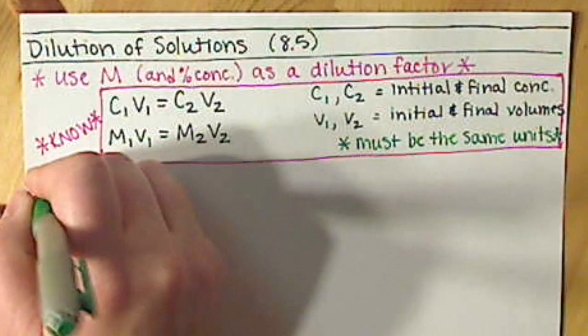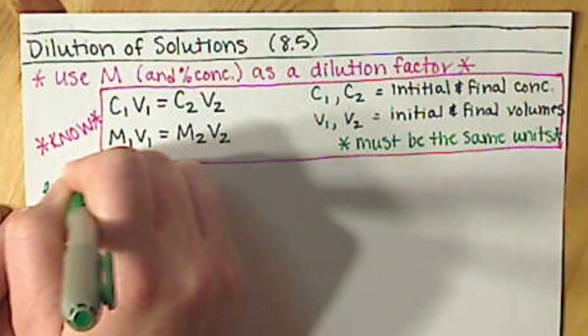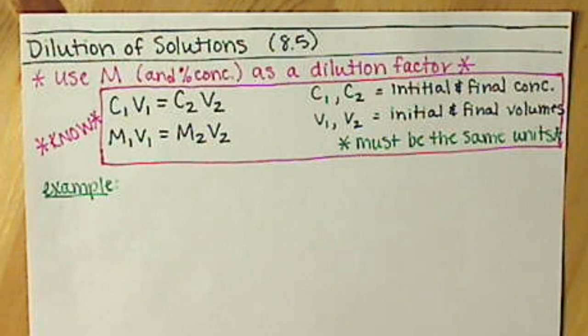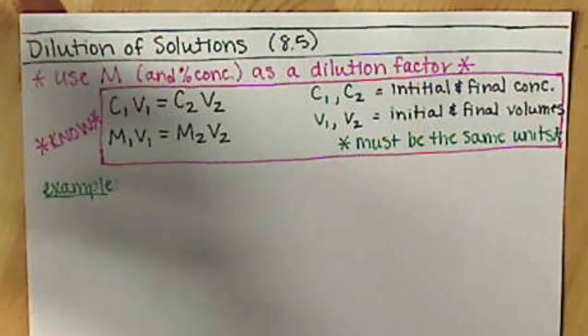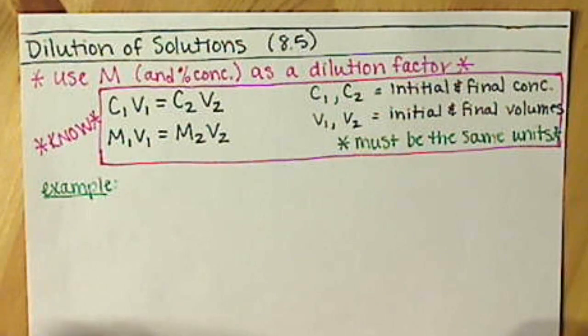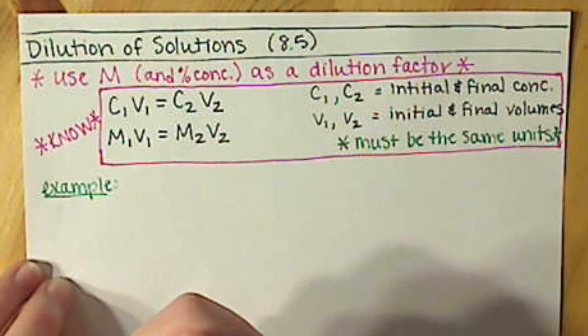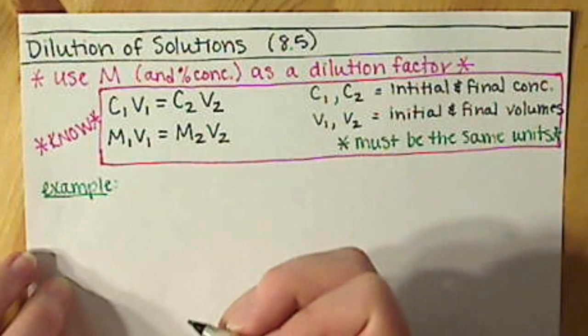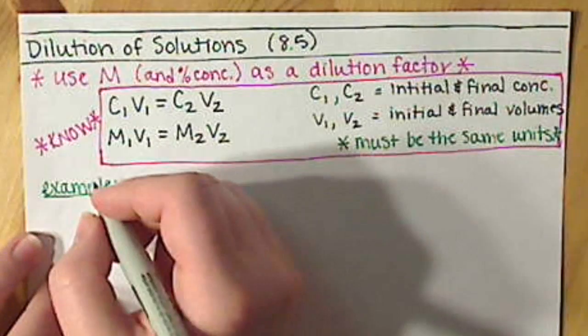Let's work through an example of using this equation. We're going to look for a final concentration of a potassium hydroxide solution if we add water to 0.25 liters of a 6.0 molar solution, and we want a total of 2.0 liters of a diluted solution.